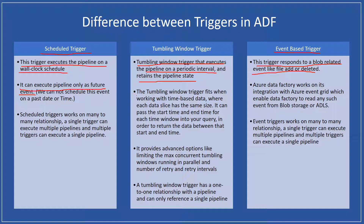However, in tumbling window trigger, we have an option — we can mention any start time. Tumbling window trigger fits when working with time-based data where each data slice has the same time size. It can pass the start time and end time for each time window into your query, in order to return the data between that start and end time.